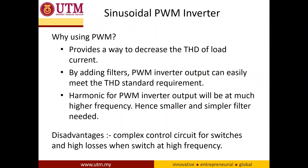The third advantage is that the harmonics content in the PWM inverter output voltage will be shifted to a very high frequency, equal to the switching frequency. So if the switching frequency is around 1 kilohertz, the harmonics will be shifted to 1 kilohertz. The disadvantage of PWM is that it requires a very complex control circuit to generate the switching signals, and there are high switching losses at very high switching frequencies.